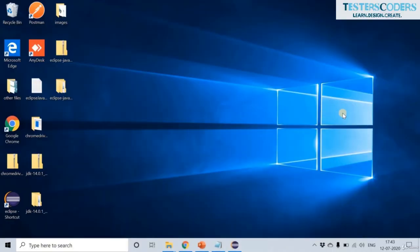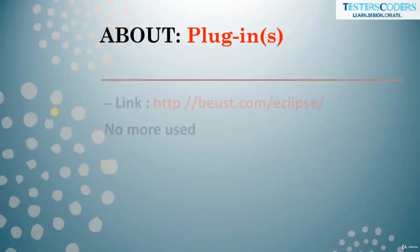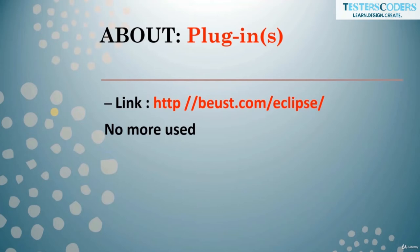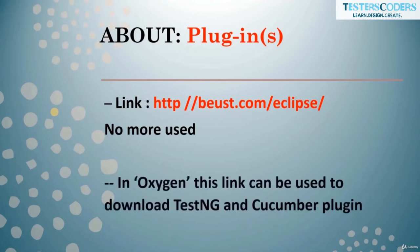The link shown is no longer in use for the latest Eclipse versions, but in the popular Eclipse version Oxygen this link is still used. If you want to use the Oxygen version you can use it to download TestNG and Cucumber via that link. However, I still recommend not using older versions since the latest Eclipse supports current Selenium trends. With this, I end this session. Thank you.